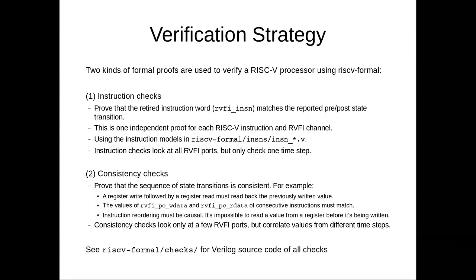When we have a processor that implements this interface, what is the verification strategy RISC-V Formal follows to formally verify correctness? There is not one big proof that we run. Instead, there are a large number of very small proofs - this is the most important trick. There are two categories: instruction checks and consistency checks. For instruction checks, we have one proof for each instruction in the ISA specification and each channel in the RISC-V Formal interface. This can easily be a couple of hundred proofs, since you might have a hundred instructions across two channels.